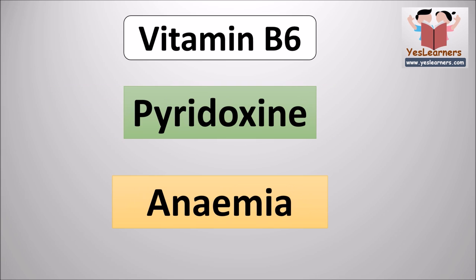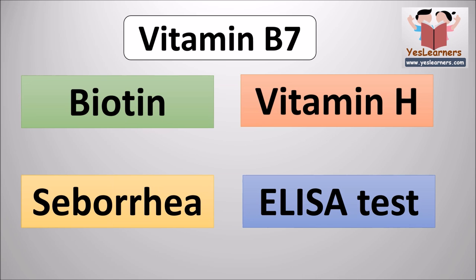The scientific name of vitamin B6 is pyridoxine. The deficiency of pyridoxine leads to anemia. The scientific name of vitamin B7 is biotin. It is also known as vitamin H. The disease caused due to the deficiency of biotin is seborrhea. Vitamin B7 is used in the ELISA test.